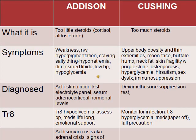Addison and Cushing disease — these are both disorders of the adrenal cortex, which secretes steroids like cortisol. Addison is too little steroid, and Cushing is too much steroids. A hint to remember: ADD — you need to ADD steroids for Addison's disease.